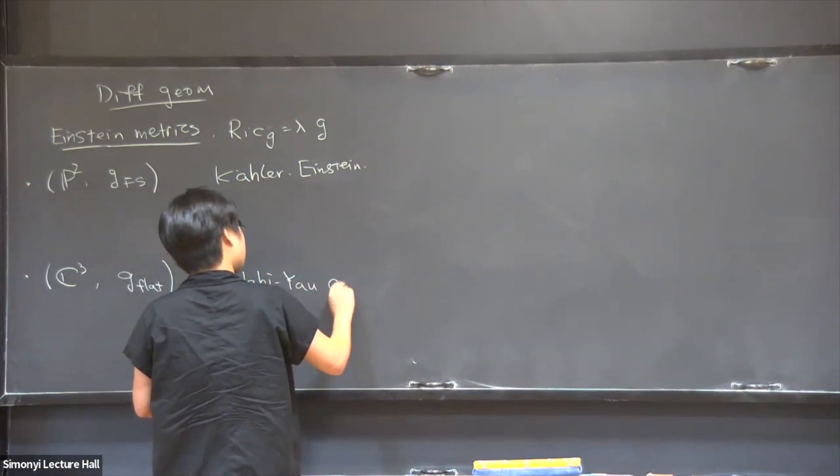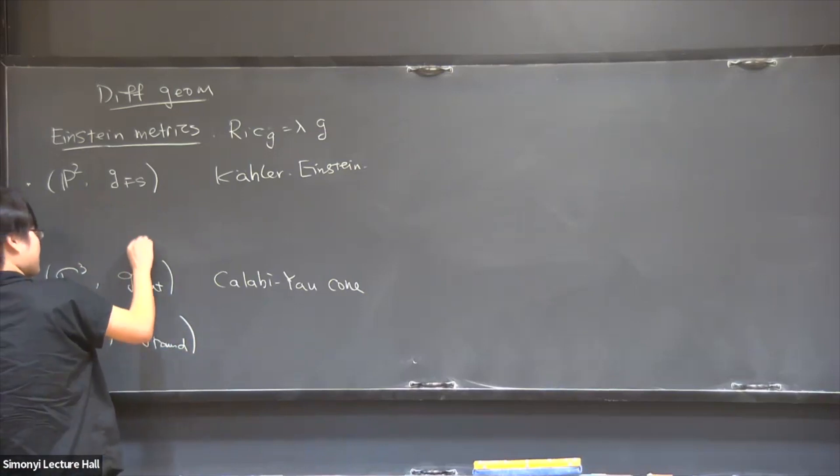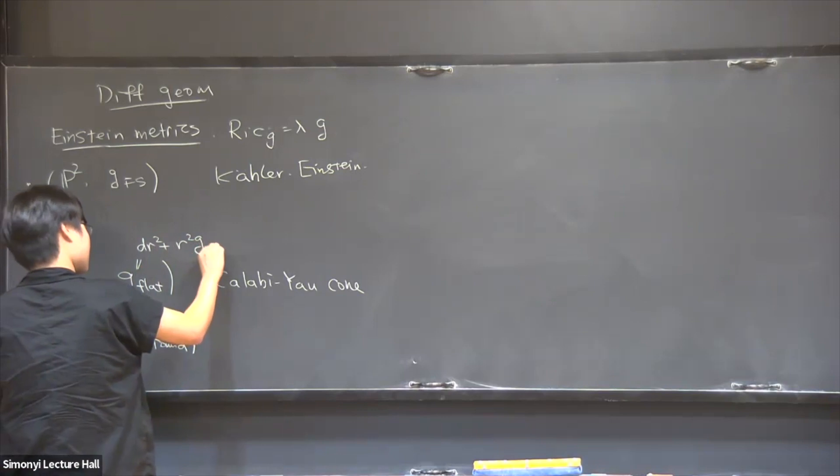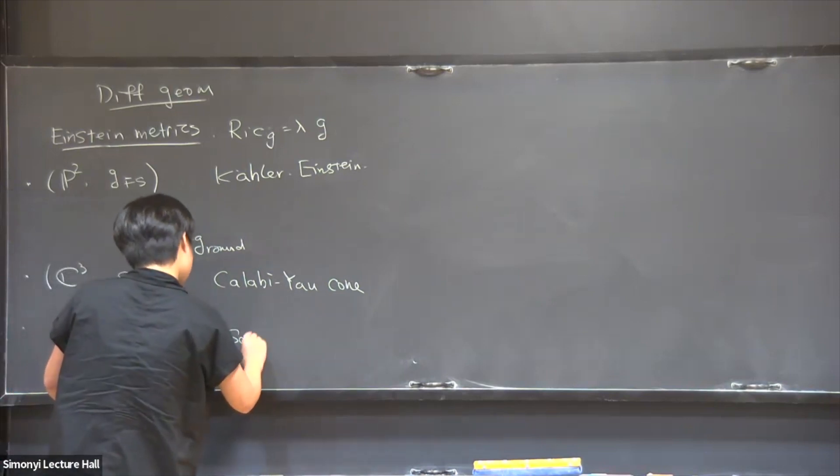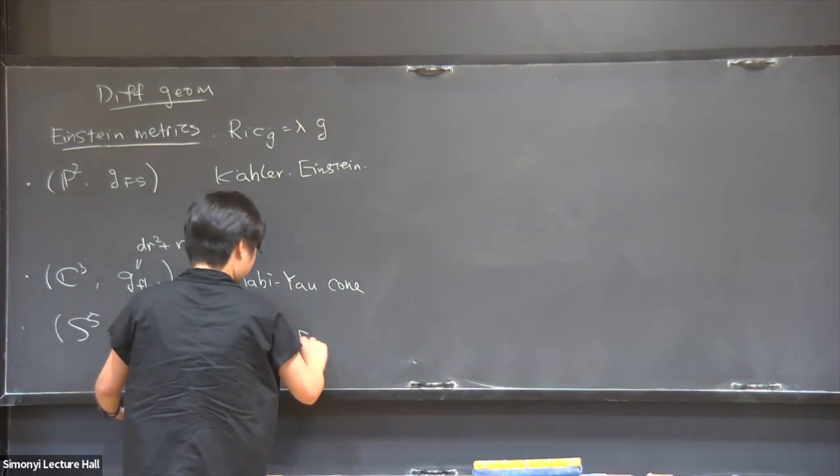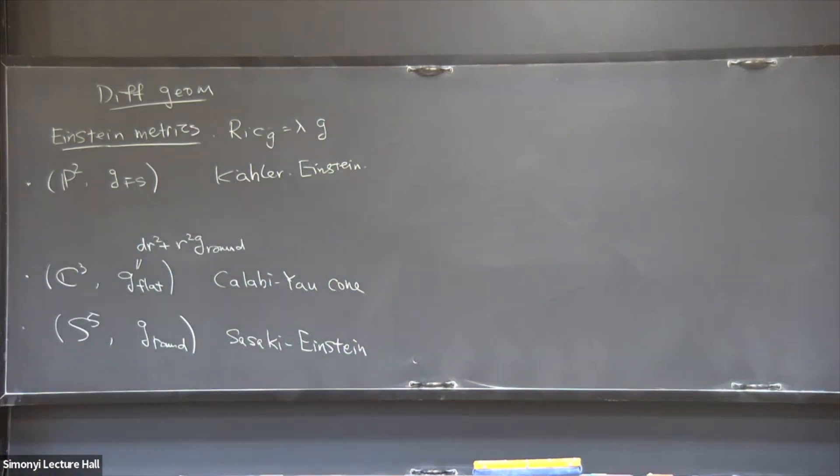So the first example is P², equipped with the Fubini-Study metric. And this is one instance of Kähler-Einstein metric. And if you take the affine cone over P², and you take the flat metric on it, this is the usual flat metric. Then this is a particular case of Calabi-Yau. In other words, it's Ricci flat Kähler. And it's also a cone metric in the sense that there's an underlying Riemannian structure.